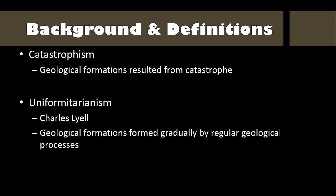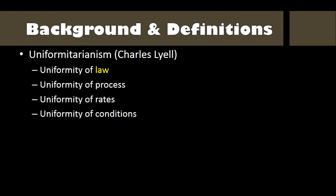Uniformitarianism is the idea that geological formations formed gradually by the regular geological processes we see around us today. Lyell believed that natural laws and geological processes, as well as the rates at which they happen and the conditions under which they happen, have always been the same. Conventional geology today continues to accept the first two, while moving away from the idea that the rate of geological processes and the conditions under which they have happened has always been the same.